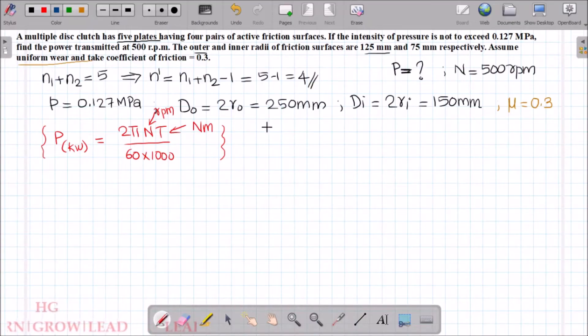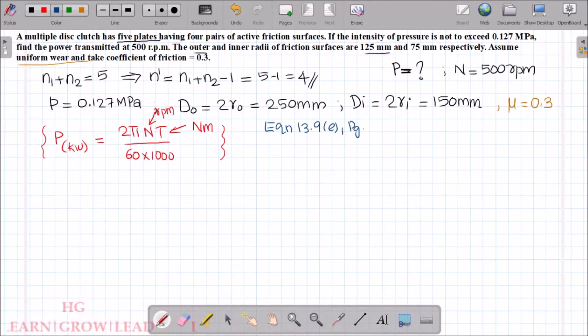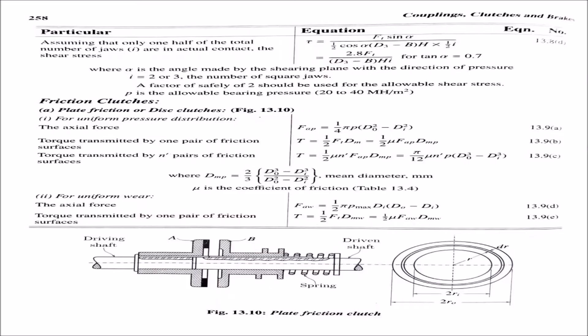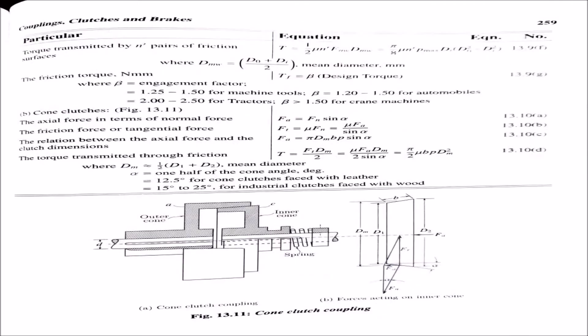From equation 13.9e on page 258, the basic torque equation is T equals half mu FA dm. However, since we have multiple friction surfaces, we use the equation on page 259 for torque transmitted by n' pairs of friction surfaces: T equals half mu n' FA dm. This equation accounts for the number of friction surface pairs.